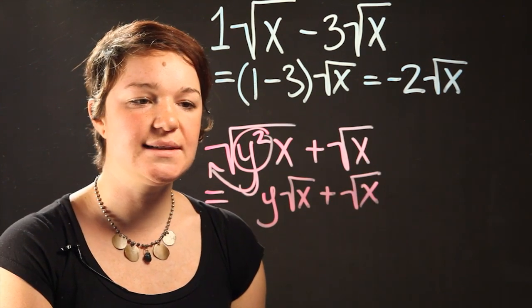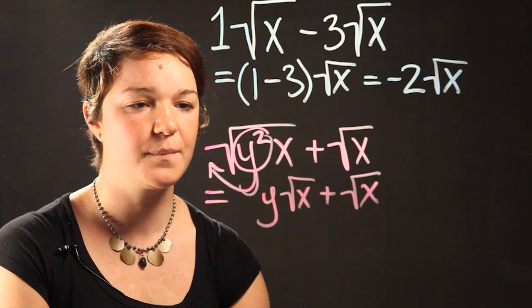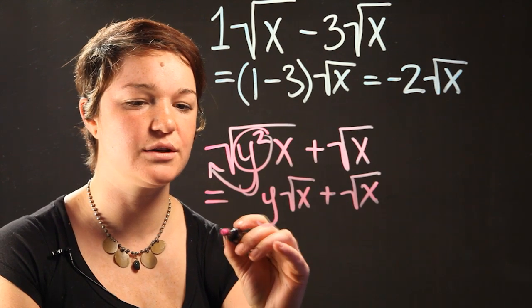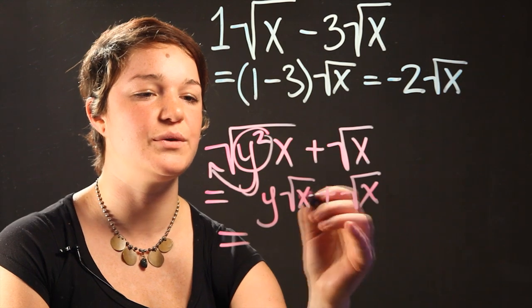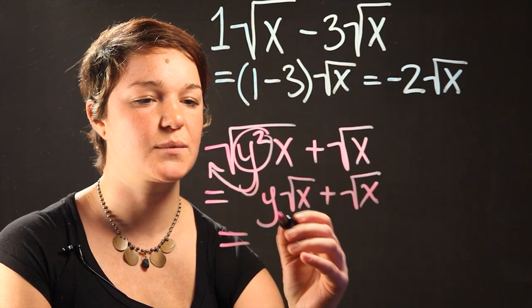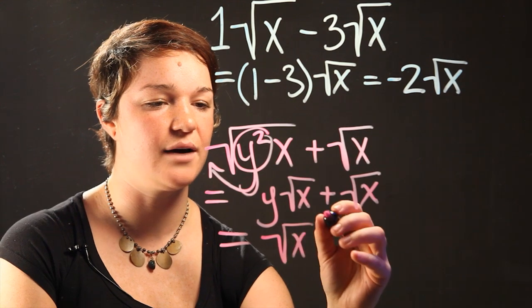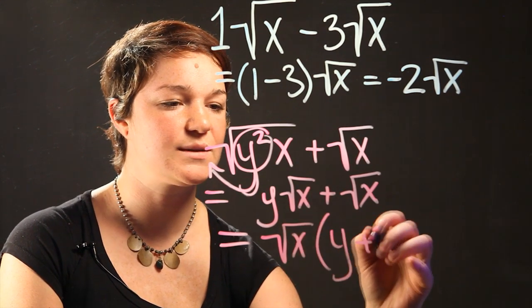So this is the simplest version or the answer to the equation. Now if you wanted to convert it into something slightly different, you can also say that this is equal to, if you're going to pull the x outside of both of these out of this equation, you're going to take radical x out. And this is going to turn into y plus 1.